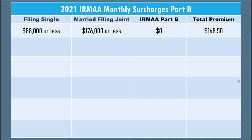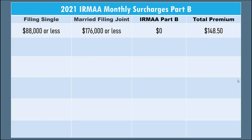Let's take a look at the thresholds. If you're filing single and your modified adjusted gross income is less than $88,000, you would not have a surcharge. If you're married filing jointly and it's under $176,000, there would be no surcharge. The base premium for 2021 for Medicare Part B is $148.50 per month. If your income is over $88,000 single or over $176,000 married filing jointly, then you have your first surcharge level of $59.40 per person per month.